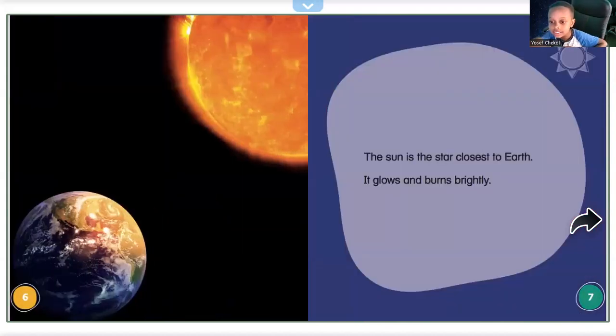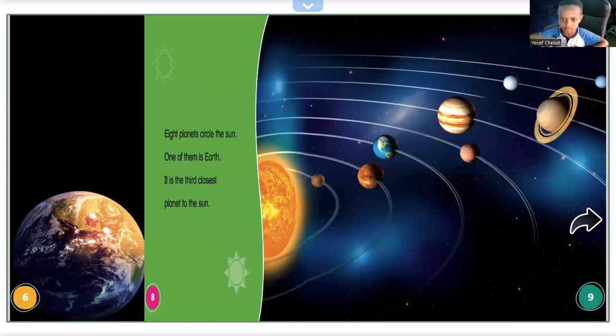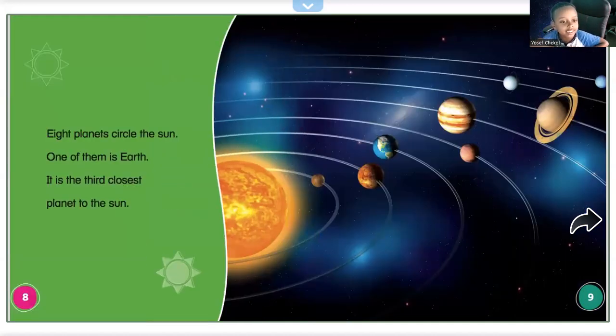The sun is the star closest to Earth. It glows and burns brightly. Eight planets circle the sun. One of them is Earth. It is the third closest planet to the sun.